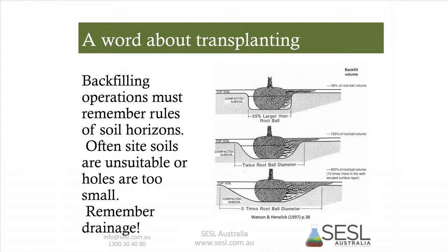When backfilling, we really must remember the rules of soil horizons. Often site soils are unsuitable, holes are too small, and drainage is often compromised. If the depth of your soil ball ends up sitting on the top of the B horizon, which is a heavy clay horizon, there may be drainage implications. In situations where topsoil is only two inches thick, you're effectively planting that root ball into the subsoil. That's potentially where gypsum might be an important part of the planting operation.